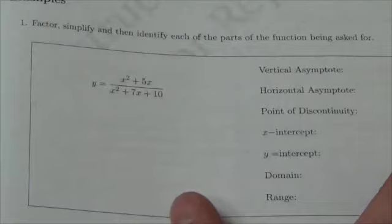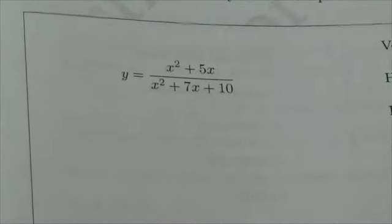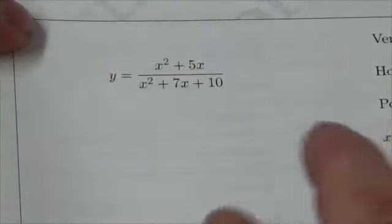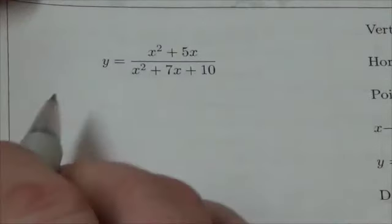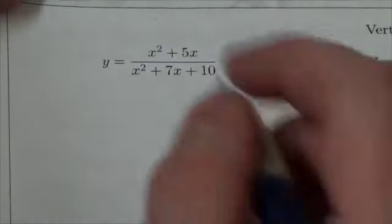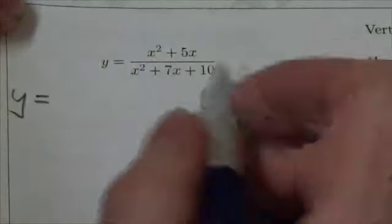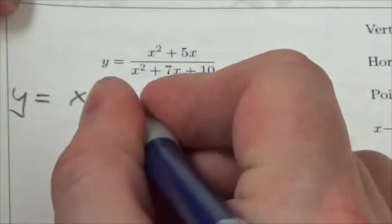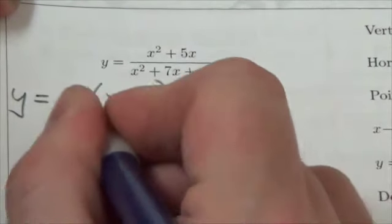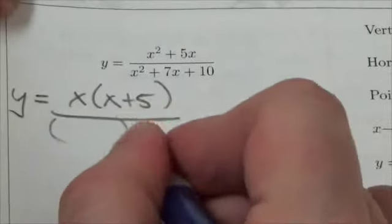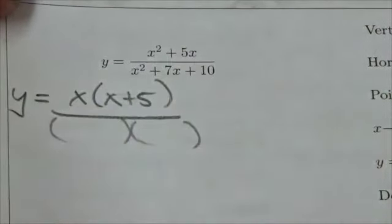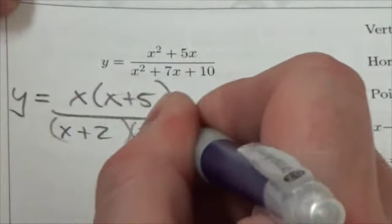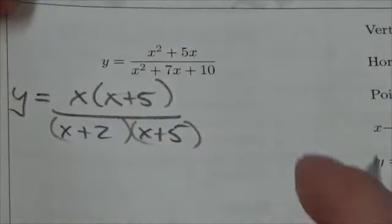The very first thing we've got to do, first of all, we're going to zoom in on this. Here's the function that we're working with. The very first thing we want to do is factor and simplify this. This is going to be y equals x squared plus 5x. That's just a binomial with a common factor of x, so that'll become x times x plus 5. And my denominator, x squared plus 7x plus 10, is going to be x plus 2, x plus 5.